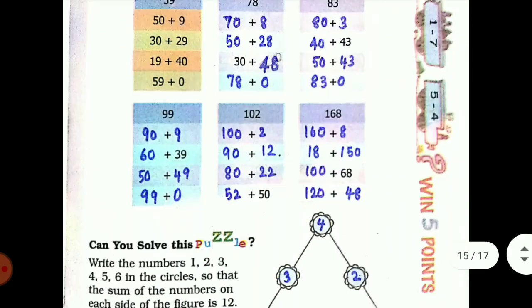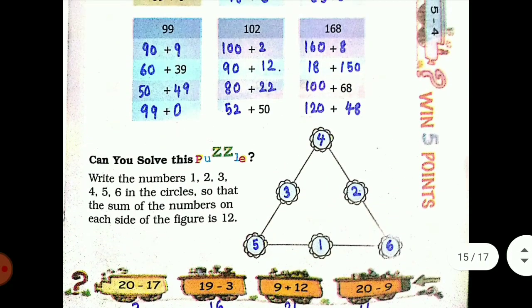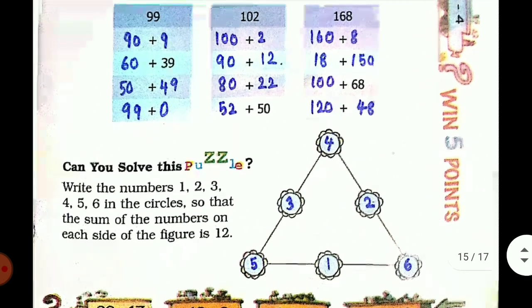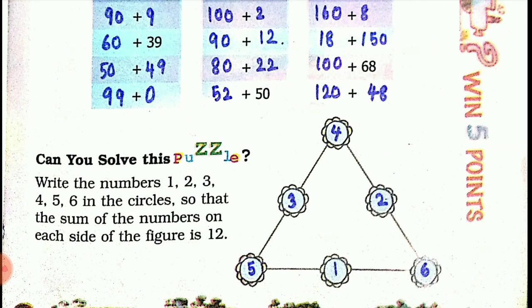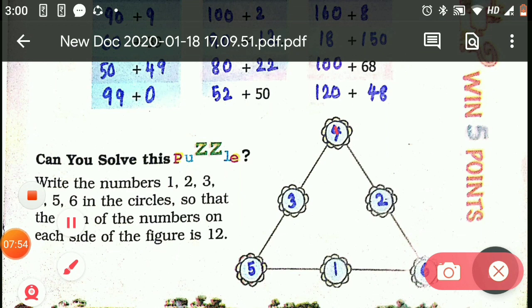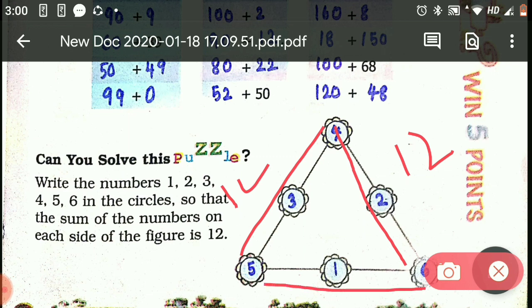Next, can you solve this puzzle? Write the numbers 1, 2, 3, 4, 5, 6 in the circles so that the sum of the numbers on each side of the figure is 12. See, 4 plus 2 plus 6 is 12. Again, if you add this you will be getting 12. If you add this you will be getting 12. If you add this you will be getting 12. So each side you should get the answer as 12, which I have written.